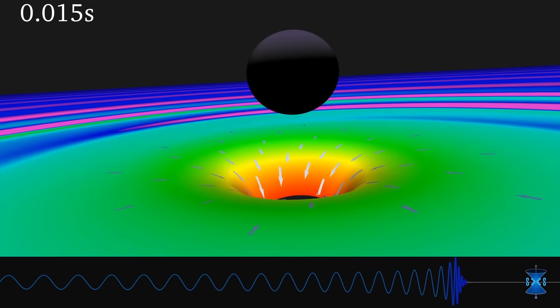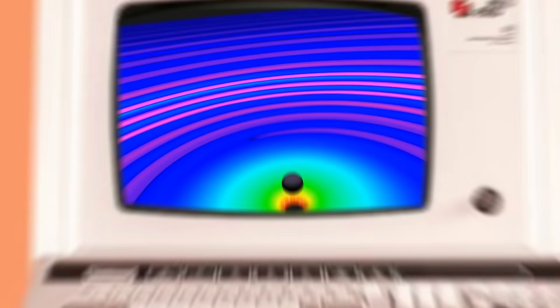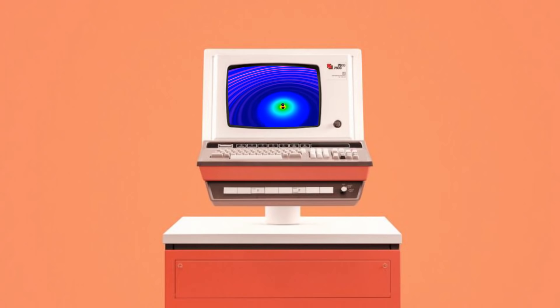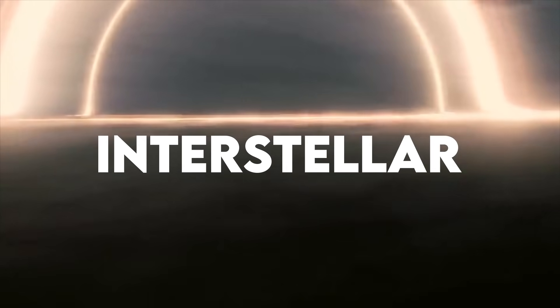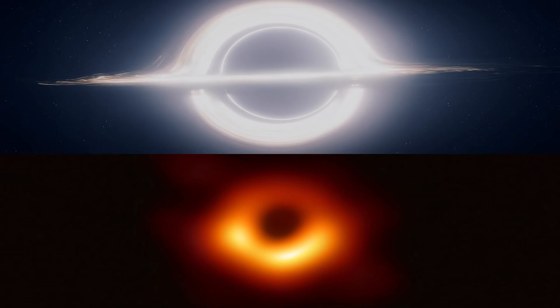The images of black holes prior to this were all simulations done by supercomputers based on the theoretical equations available. For example, the event horizon of a black hole we see in the movie Interstellar is an artistic simulation of what a black hole would actually look like.